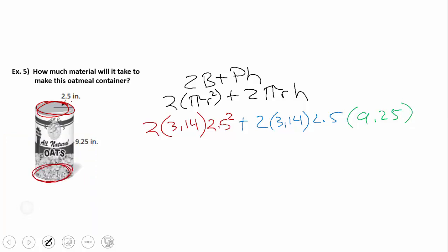2 times 3.14 times 2.5 squared does give us 40.625. And then 2 times 3.14 times 2.5 times 9.25 does give us 145.225. When I add those two together I get 185.85.